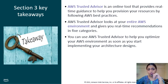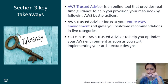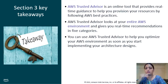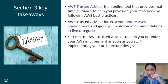For Section 3 key takeaway: in this section we learned about the online tool known as AWS Trusted Advisor, which provides real-time guidance to help you provision your resources following best practices. AWS Trusted Advisor looks at your entire AWS environment and provides recommendations in five categories. You use this tool to help optimize your AWS environment as soon as you start implementing your architecture design.